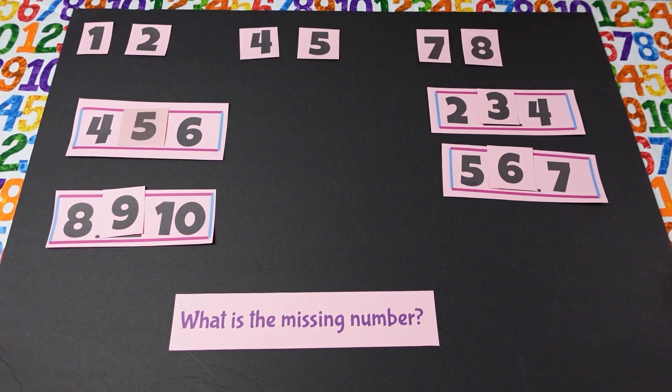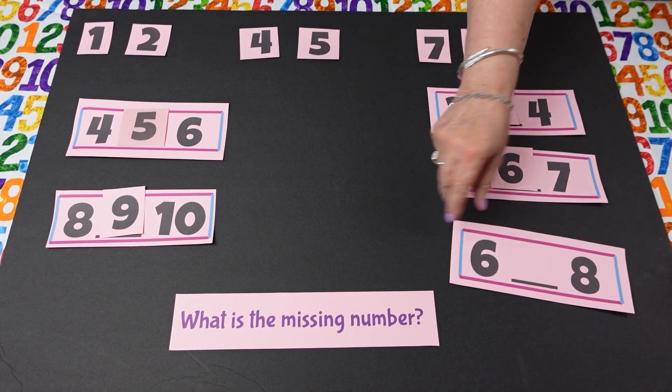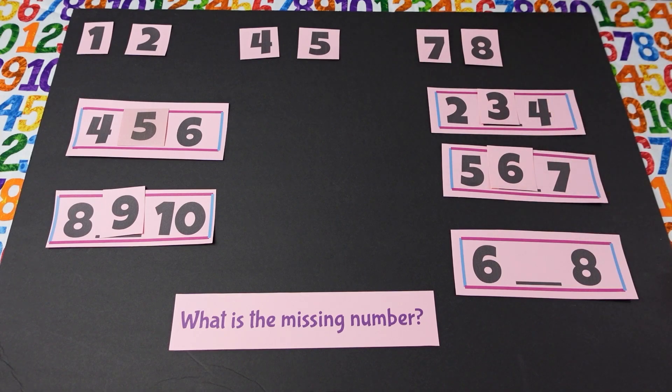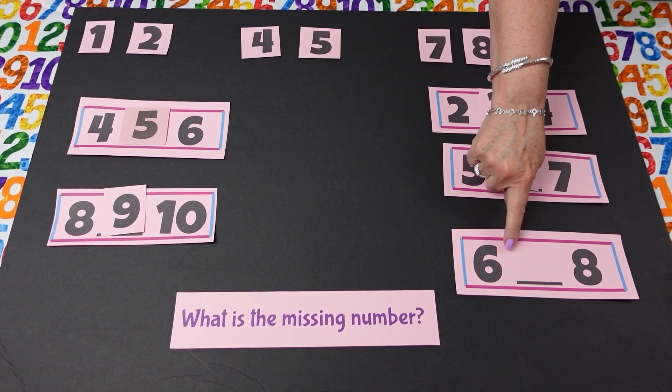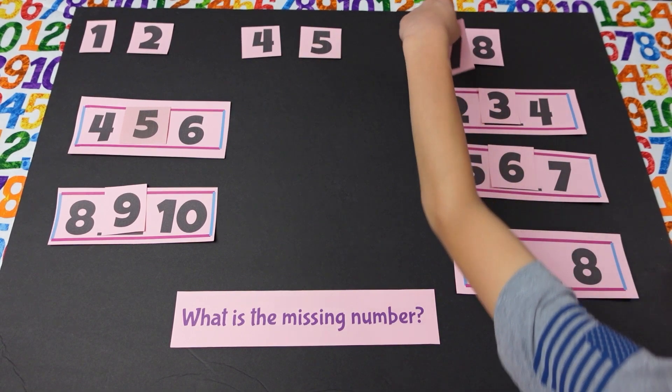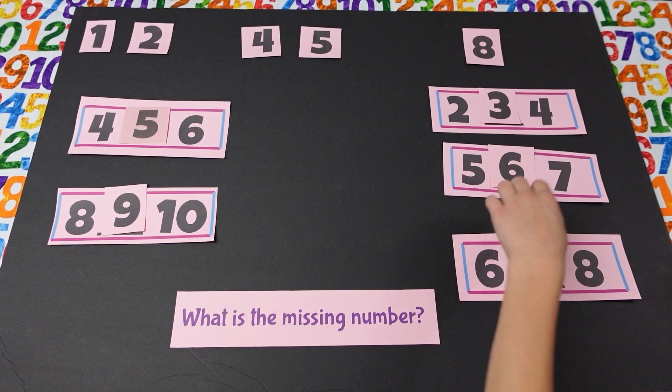Okay. You ready for your next one, Mr. Jonathan? Yes, I am. Okay. Good job. What is that number? Six. And what is that number? Eight. And what is missing right there? Seven. Okay. You're right. Eight.